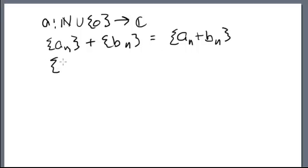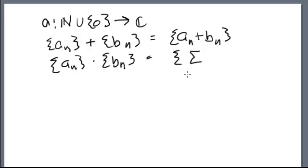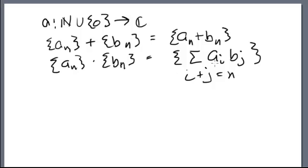For multiplication, we pick elements whose indices add up to n — we find all pairs, one from each sequence, such that their indices sum to n, multiply them together, and sum over all such pairs. There's only a finite number of such terms because our indices are non-negative. So this defines our commutative ring and its algebraic structure.